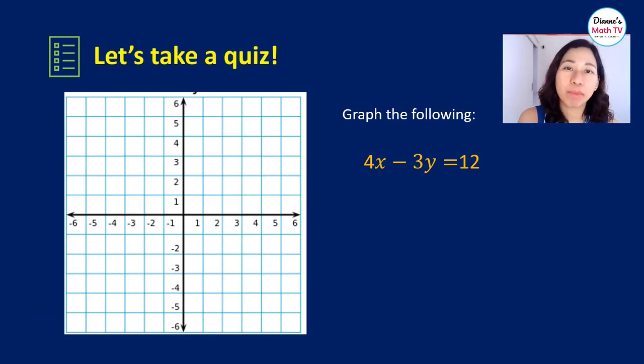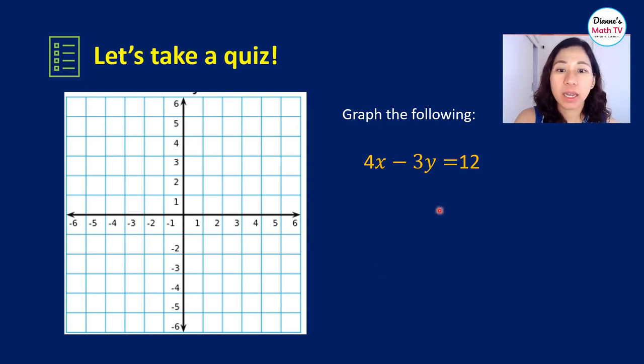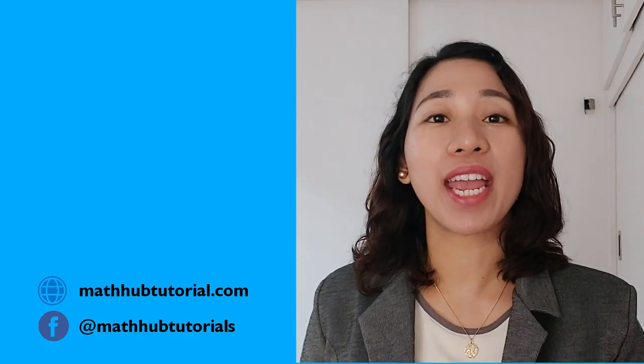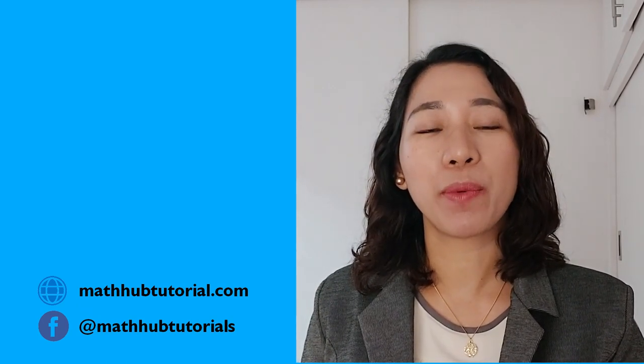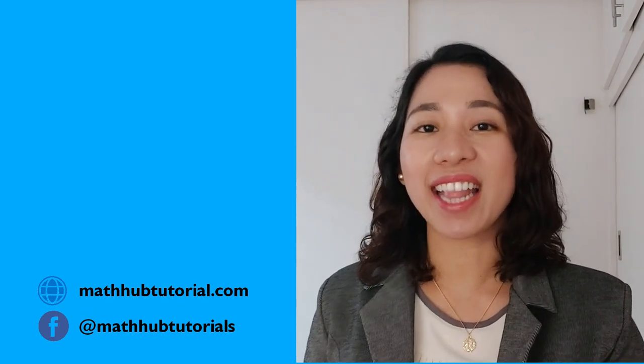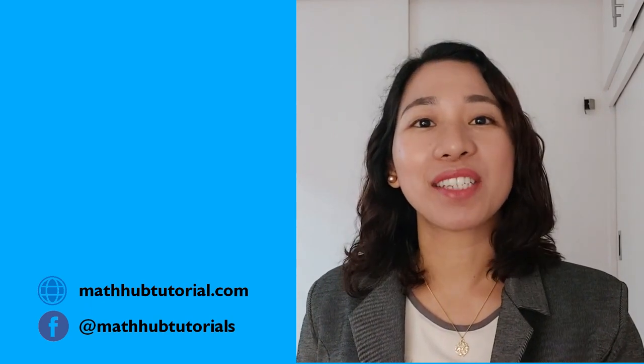Alright. Let's check what you have learned from this video lesson. I want you to graph the following: 4x minus 3y is equal to 12. The complete solution to this problem can be found in our website. Look at the link in the description below. I hope that you learned a lot from watching this video lesson. If you have any questions at all, please write them down on the comment section below and I will give you an answer as soon as I can. If you like this video, please share it and like it. And again, don't forget to subscribe in my YouTube channel. See you in my next video lesson!